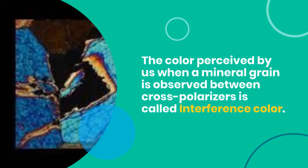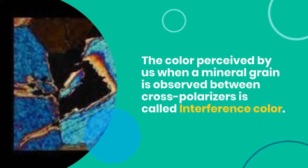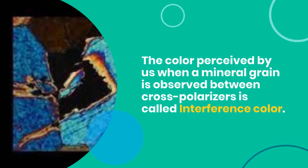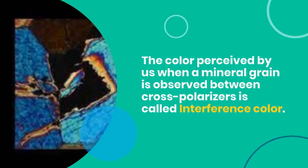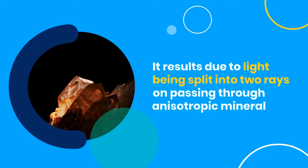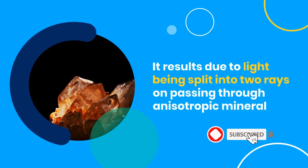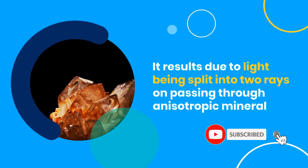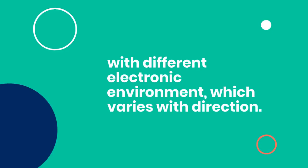Interference color: the color perceived when a mineral grain is observed between cross-polarizers is called interference color. It results from light being split into two rays on passing through an anisotropic mineral with a different electronic environment, which varies with direction.